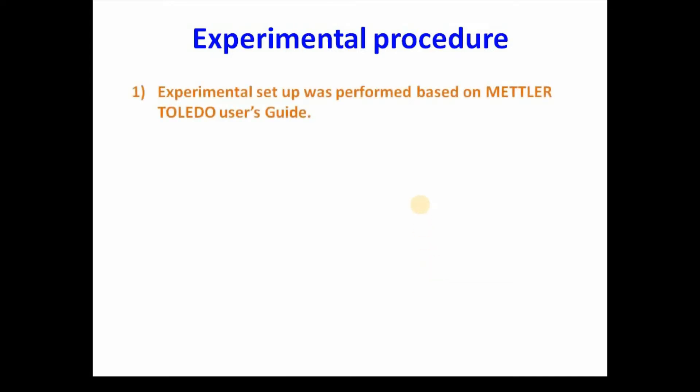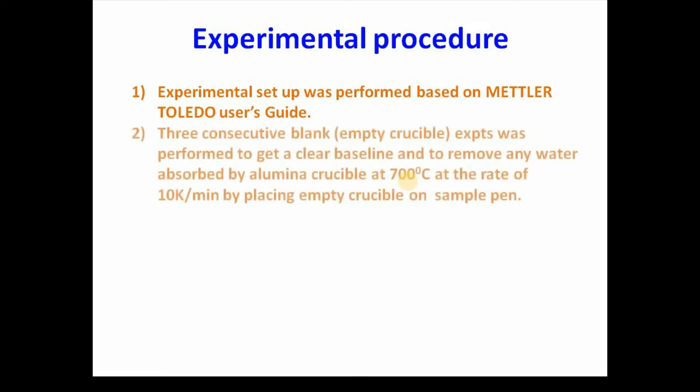Now let us consider the experimental procedure. The experimental procedure was set up based on the Mettler Toledo user's guide. Initially, three consecutive blank experiments were performed to get a clear baseline and to remove any water absorbed by the alumina crucible at 700 degrees Celsius at the rate of 10 K per minute, by placing an empty crucible on the sample pan.